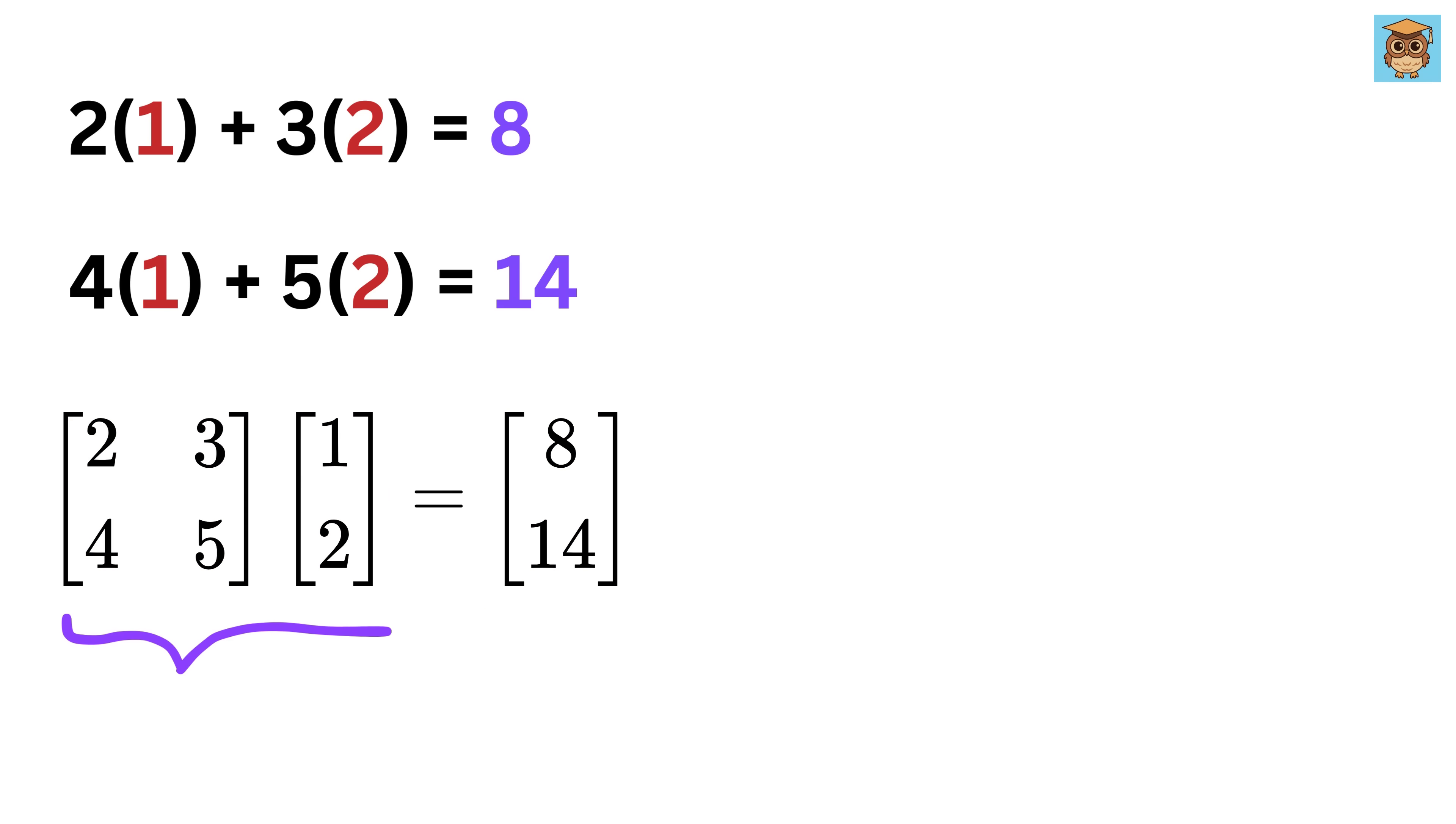But wait, this is exactly what happens when we multiply a matrix with a vector. So what does this really mean? It means that our original vector, which was just the numbers 1 and 2, got transformed into a new vector, 8 and 14. This is not just some random arithmetic. This is a mathematical operation that is actually changing the vector.